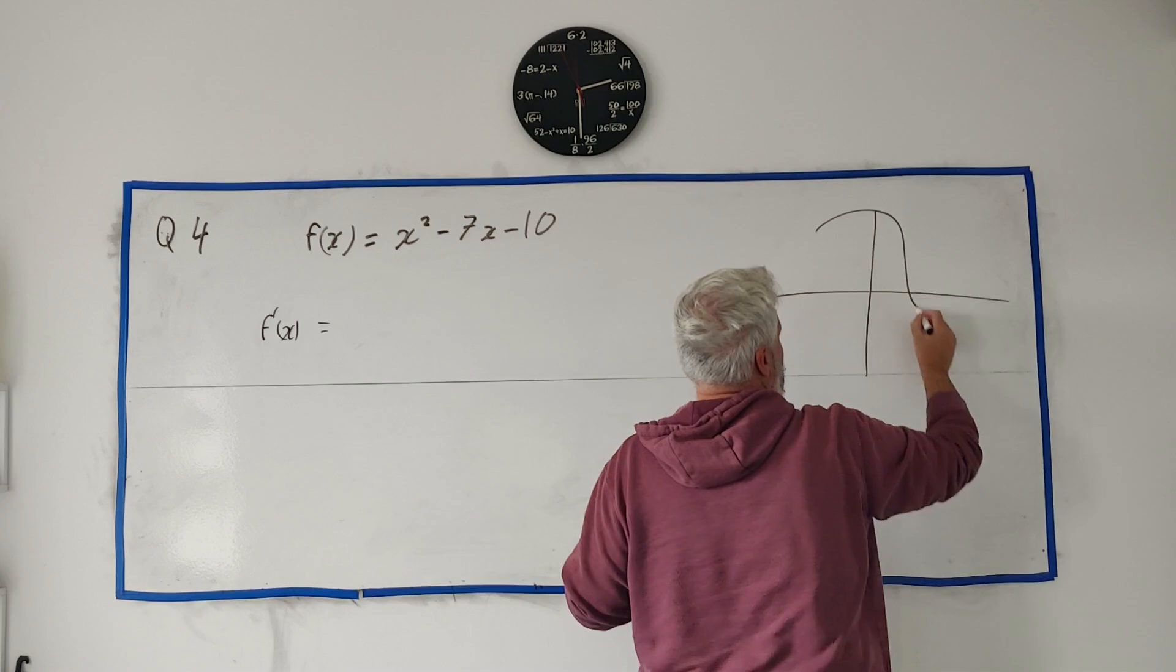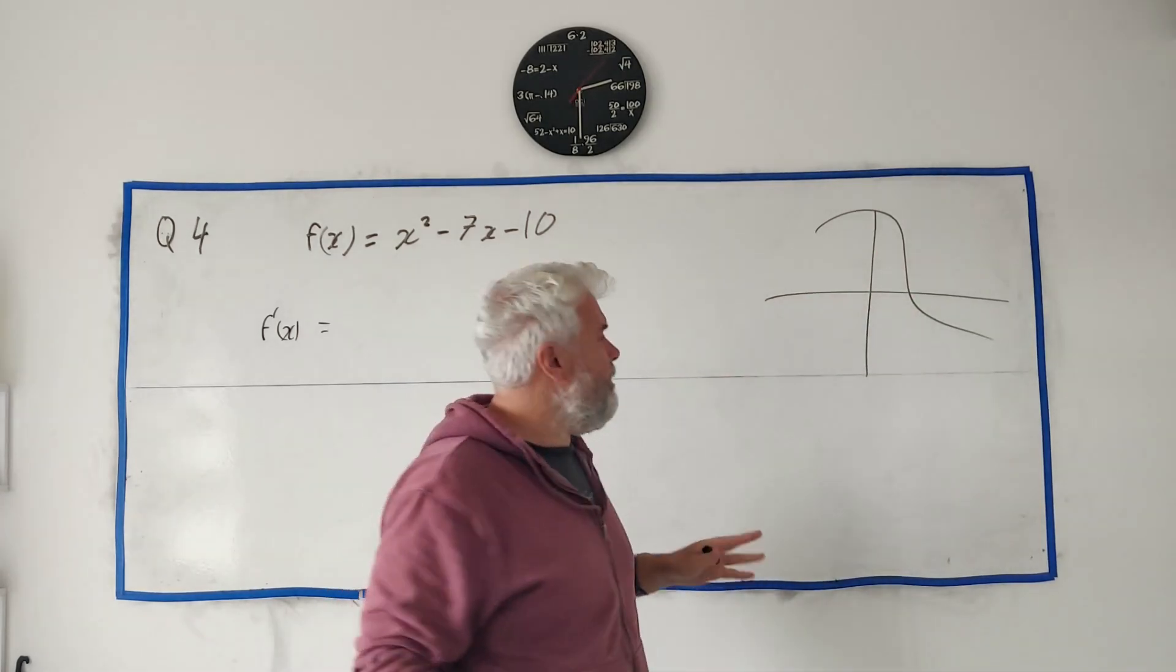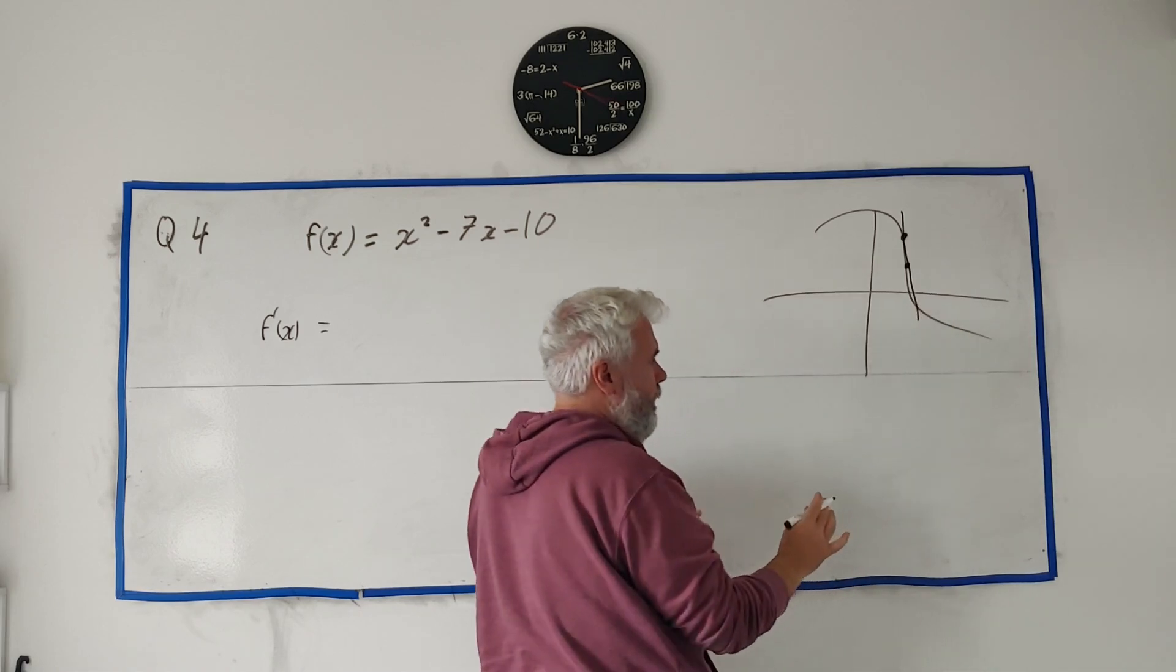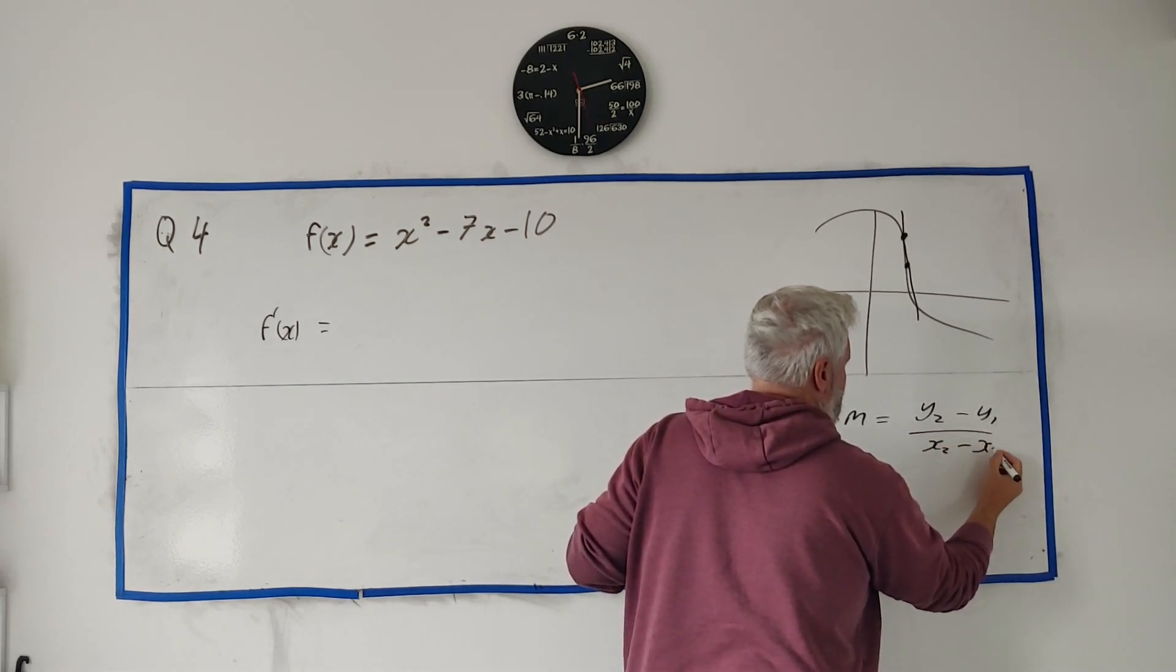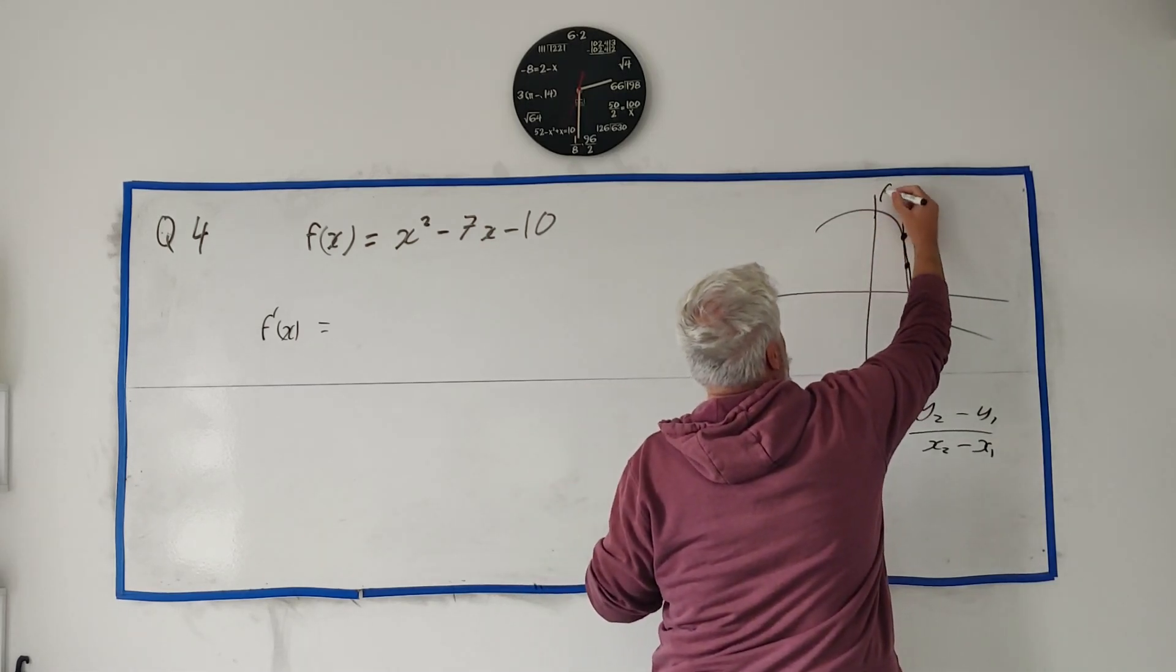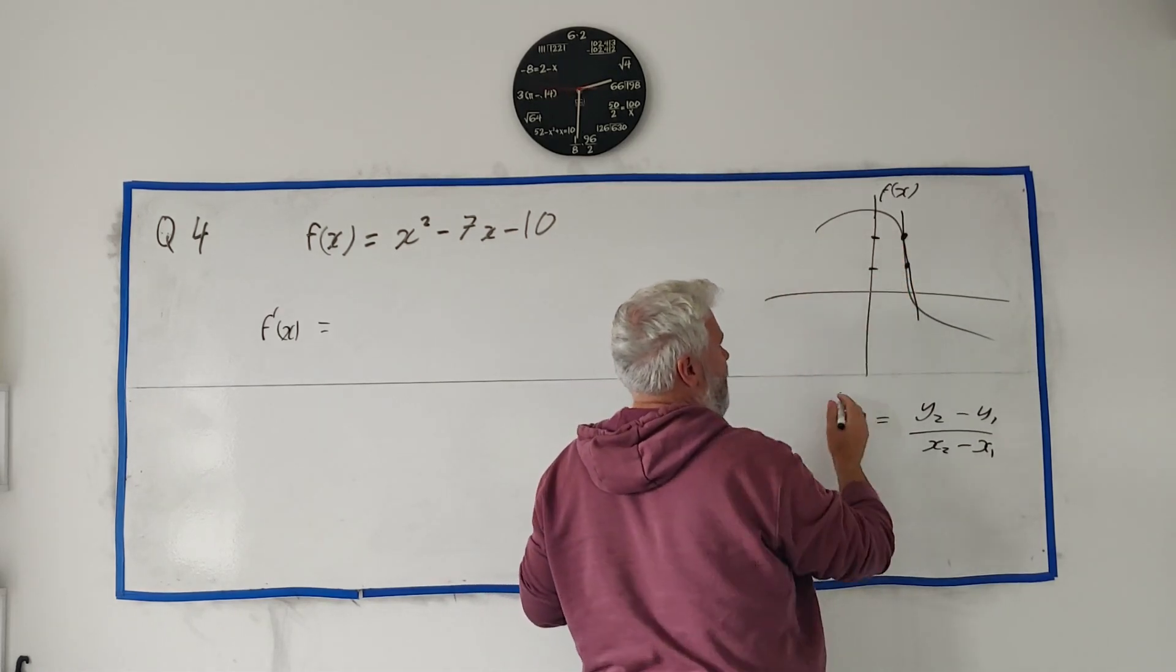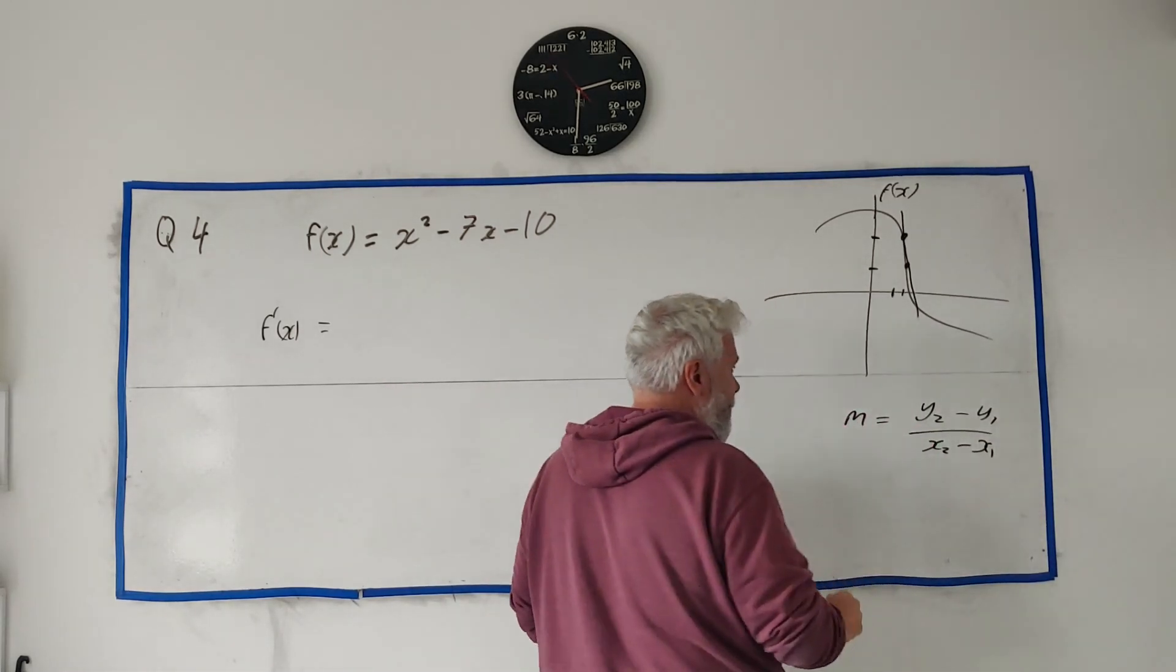There's a formula for differentiation that, again, a lot of people just memorize. I'm not going to allow us to memorize it. I'm going to show us where it comes from. I'll write it in a moment. If I just get any function like this, I don't care what it looks like. I'm not trying to make it look like that one. Any function. What differentiation is, it's the slope at a certain point. That's what differentiation is. But how we find it is we look at two points, and we get the slope between these two points. So remember the formula for slope. Slope is y2 minus y1 over x2 minus x1.